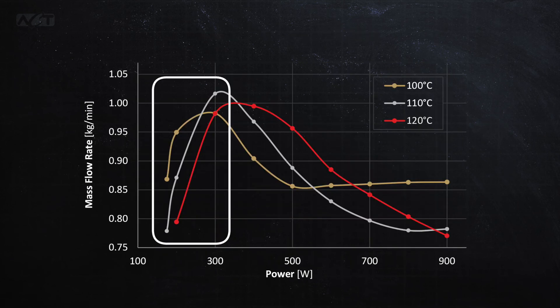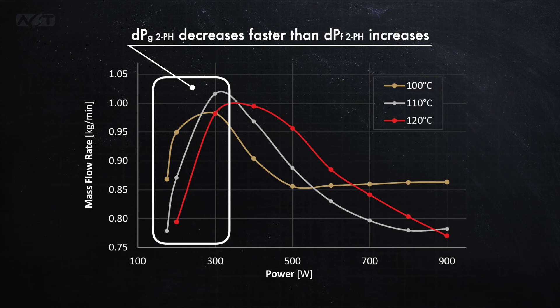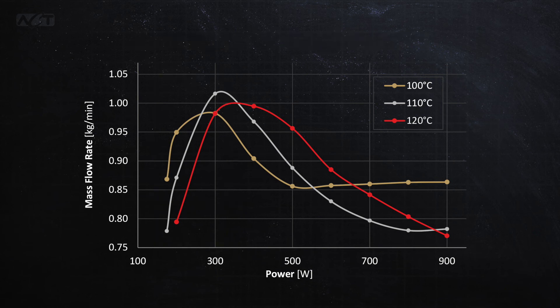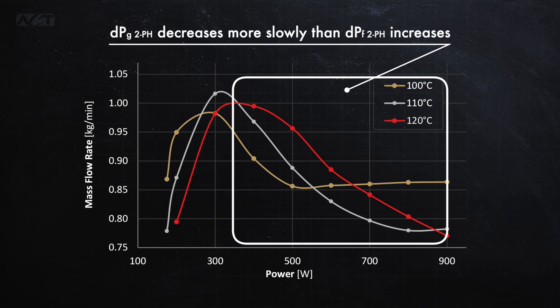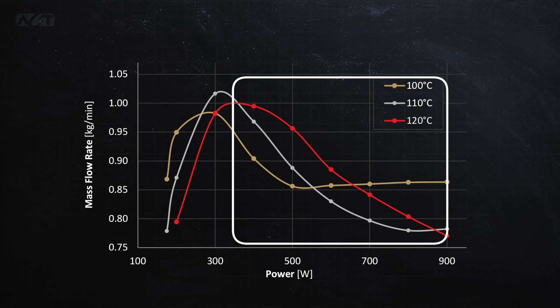At lower powers, the two-phase head decreases faster than the two-phase frictional pressure drop increases, and this increases the flow rate. However, as the power increases past about 400 watts, the two-phase head decreases more slowly than the now rapidly increasing two-phase frictional pressure drop. Because of this, the flow rate begins to fall.